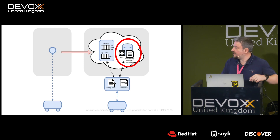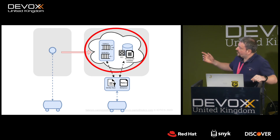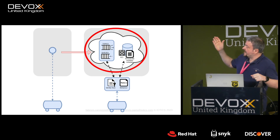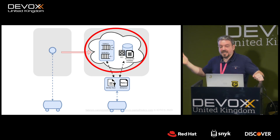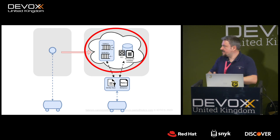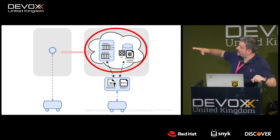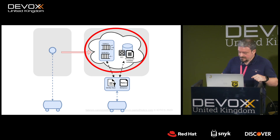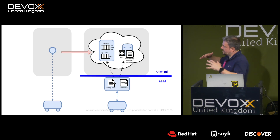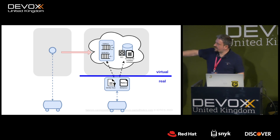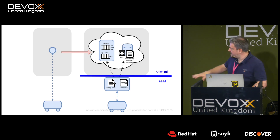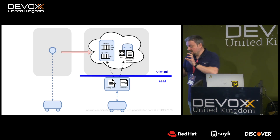Any other digital twin in the environment can find you, bind to you, and understand your semantically modeled metadata. Access control rules sit there as well, acting as a logical firewall around the twin. Where you put that environment doesn't really matter — cloud, edge gateway, on-premise — as long as the northbound interface is connected to the smart city network.